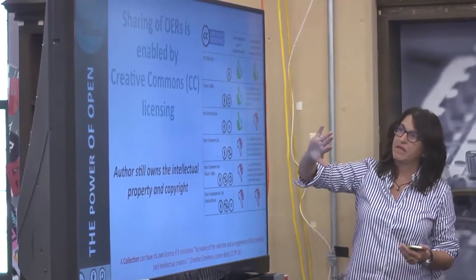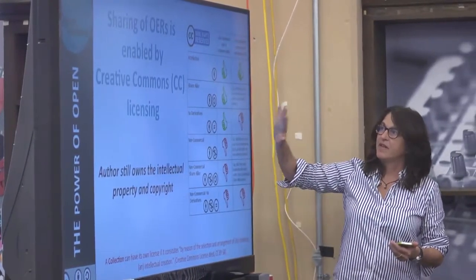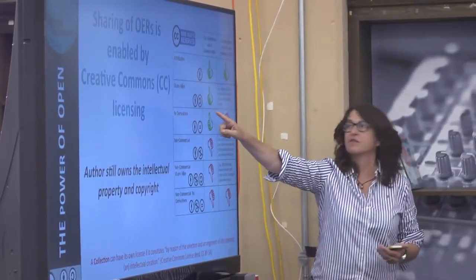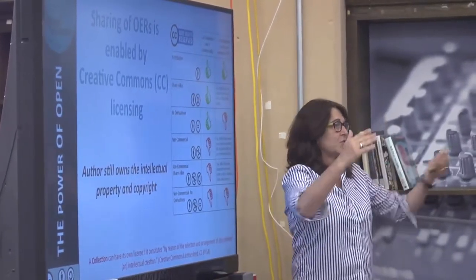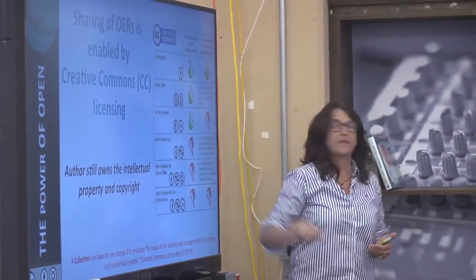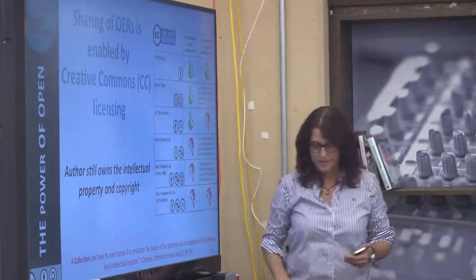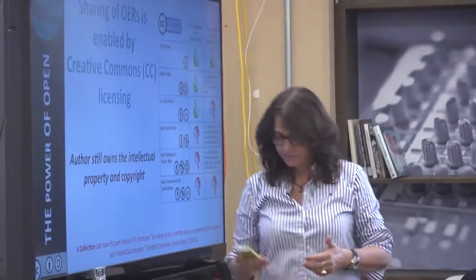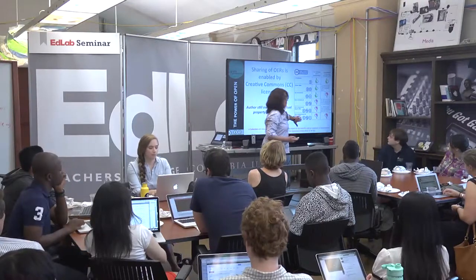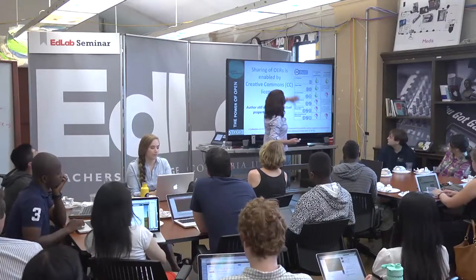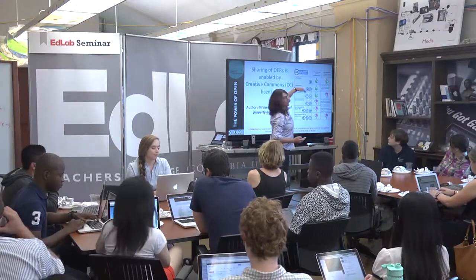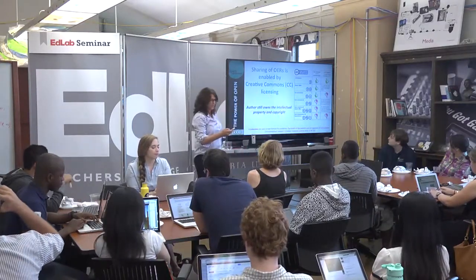The OER movement suggests we should use the most open license as our default — meaning share it, do what you will with it, but attribute authorship. That's what this symbol is about. Not everyone's ready to do that; a lot of authors are still at the more restrictive end. But some, led by people like David Wiley, are all the way at the top and sharing absolutely completely.